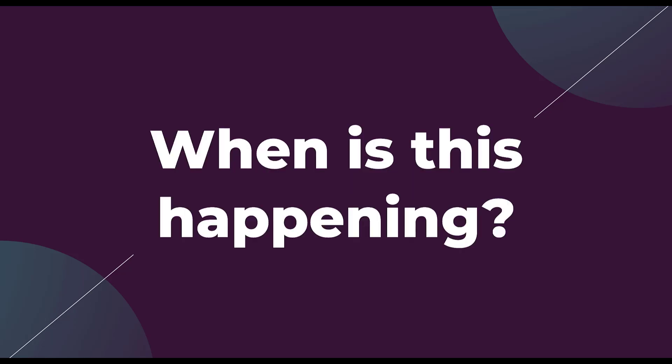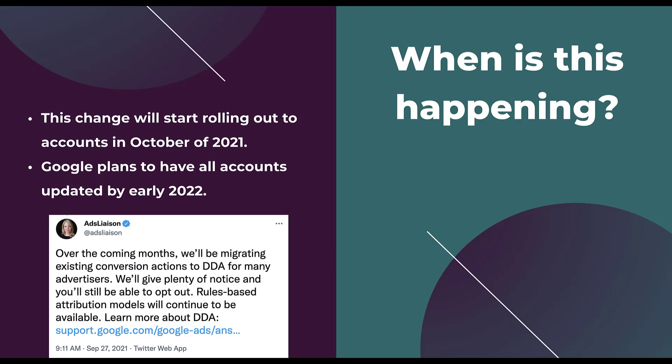So when do we need to be on the lookout for this data driven attribution changeover? Like most other changes, this will be rolling out across the entire Google Ads environment over a number of months, starting in October of 2021 — where new conversion actions will be automatically opted into the data driven attribution model. Their goal is to have all accounts opted in by early 2022. Google's ads liaison confirmed they will be migrating existing conversion actions to DDA for many advertisers, promising to give plenty of notice, and you'll still be able to opt out if you don't want to. Just keep an eye out in your account for notifications letting you know your conversion actions are about to be adjusted.